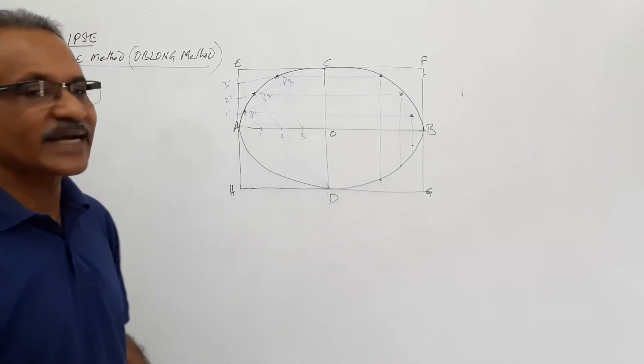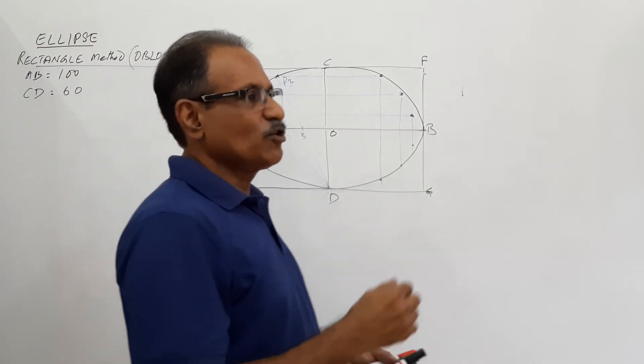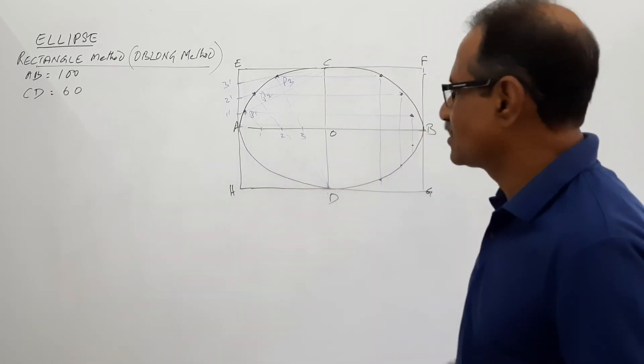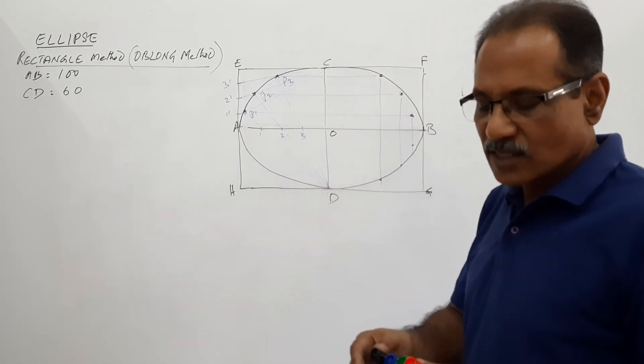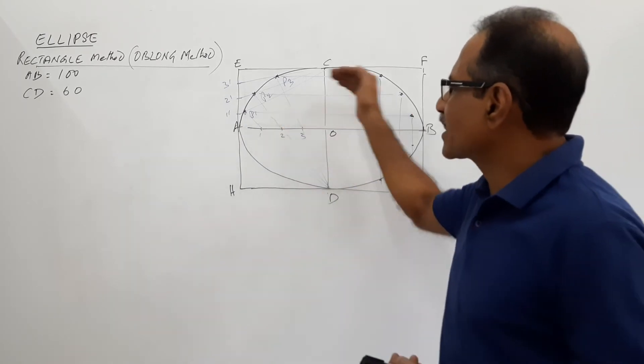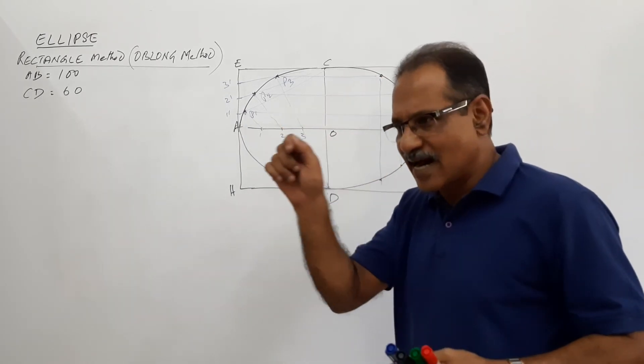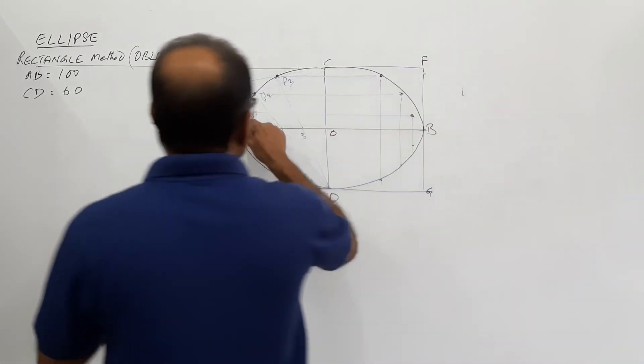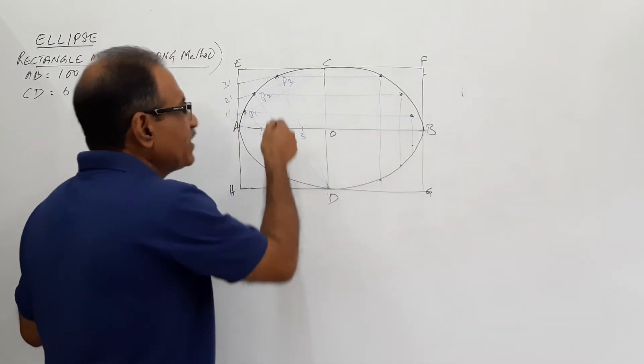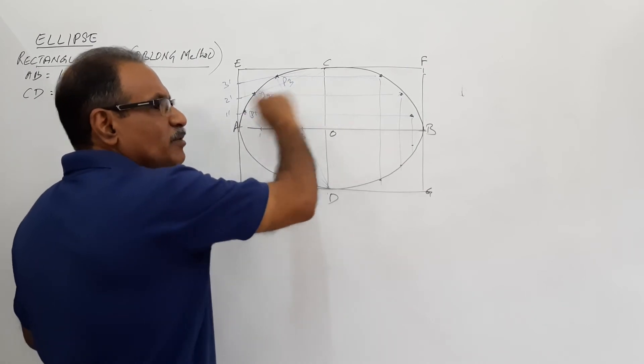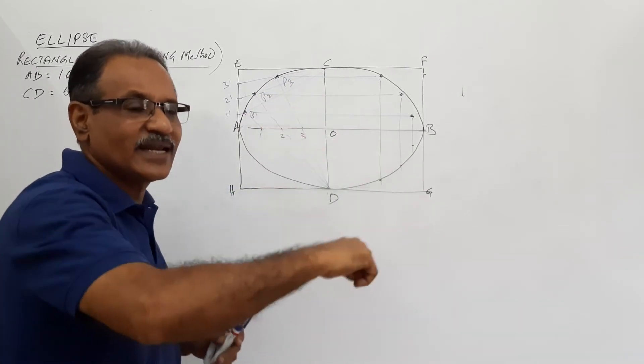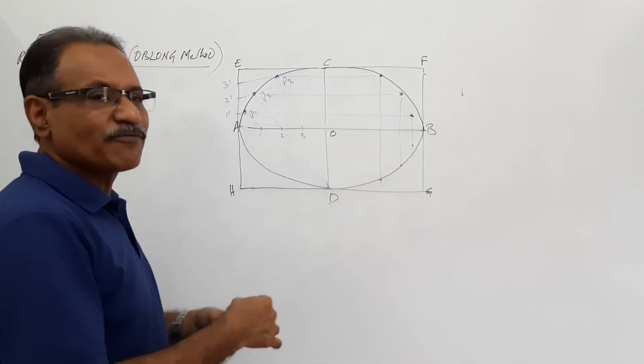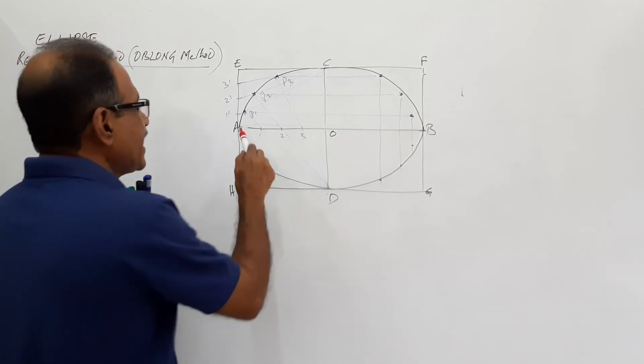Since I am not following the correct dimensions, there will be huge difference in the correct true shape and the shape which I get. You have to keep the construction lines very light and darken the ellipse curve only. Once you darken it, draw only once. If it is not correct, erase it and redraw. Don't thicken it by drawing lines nearer to that.